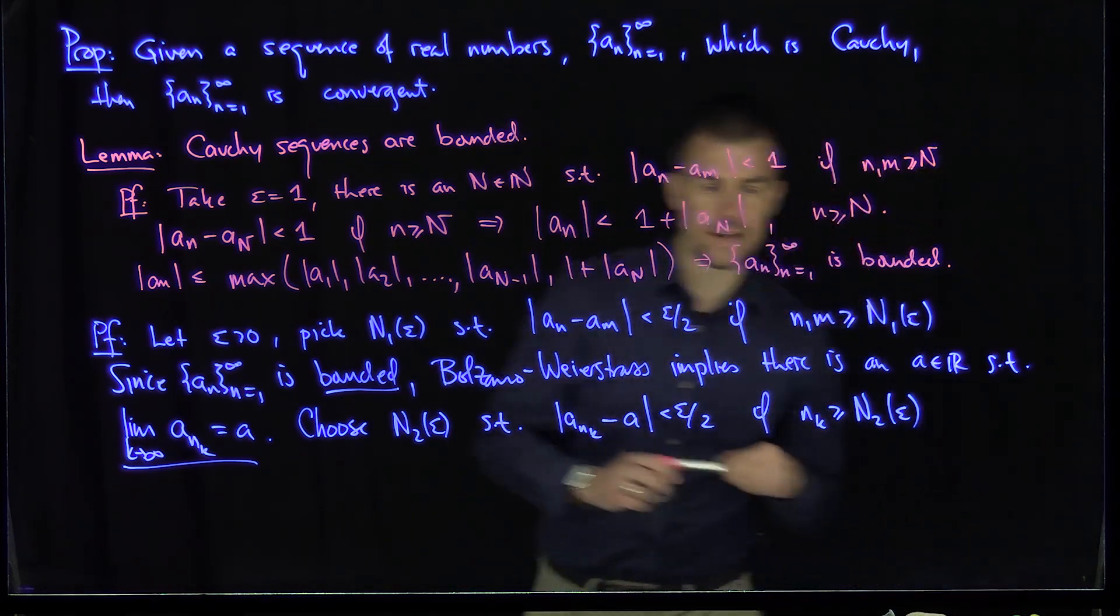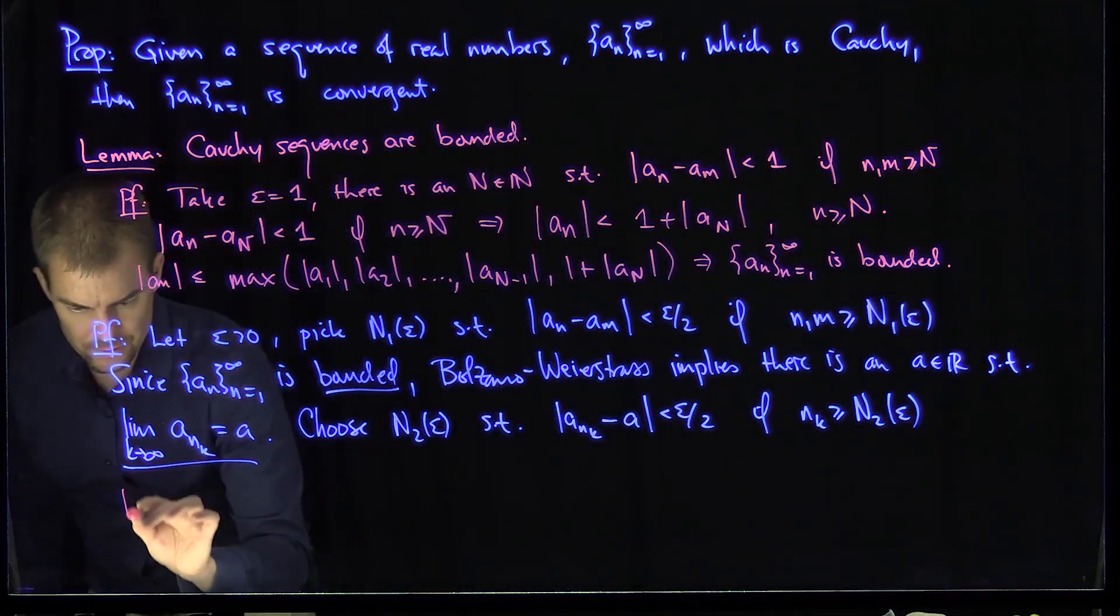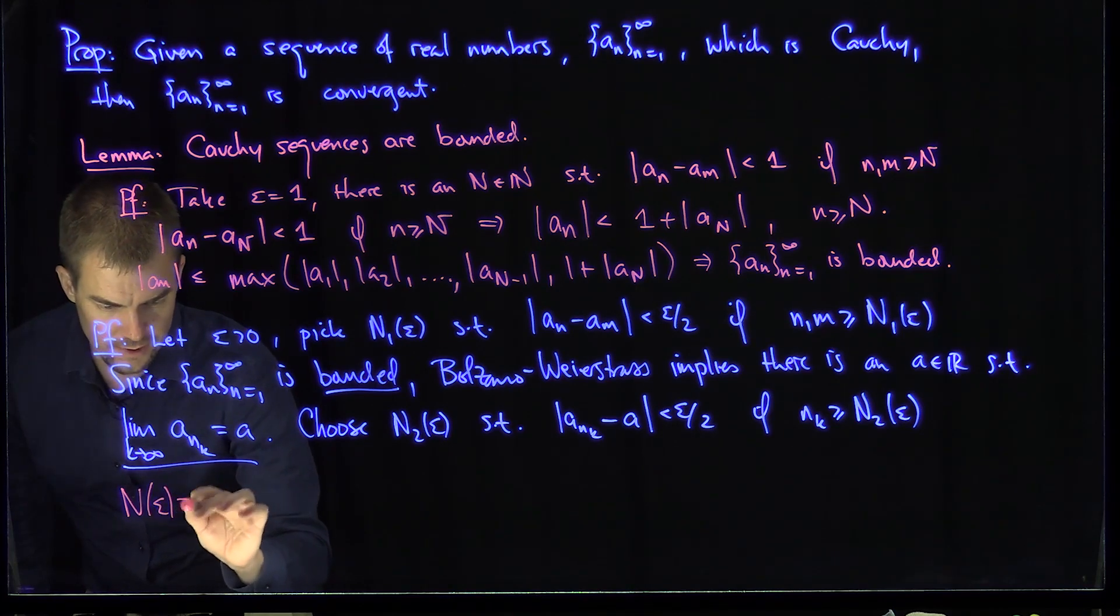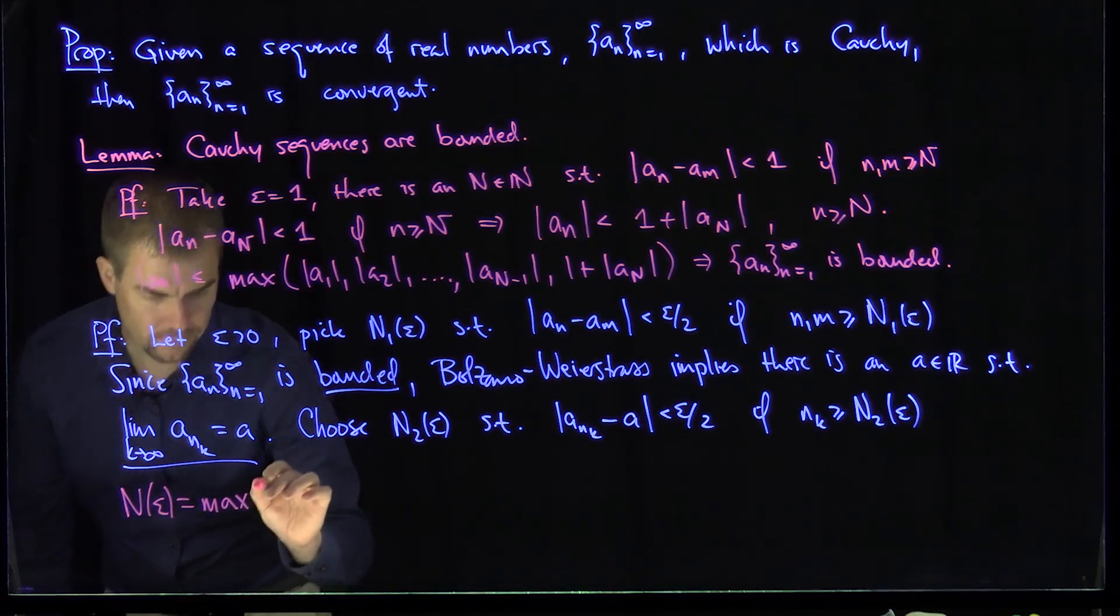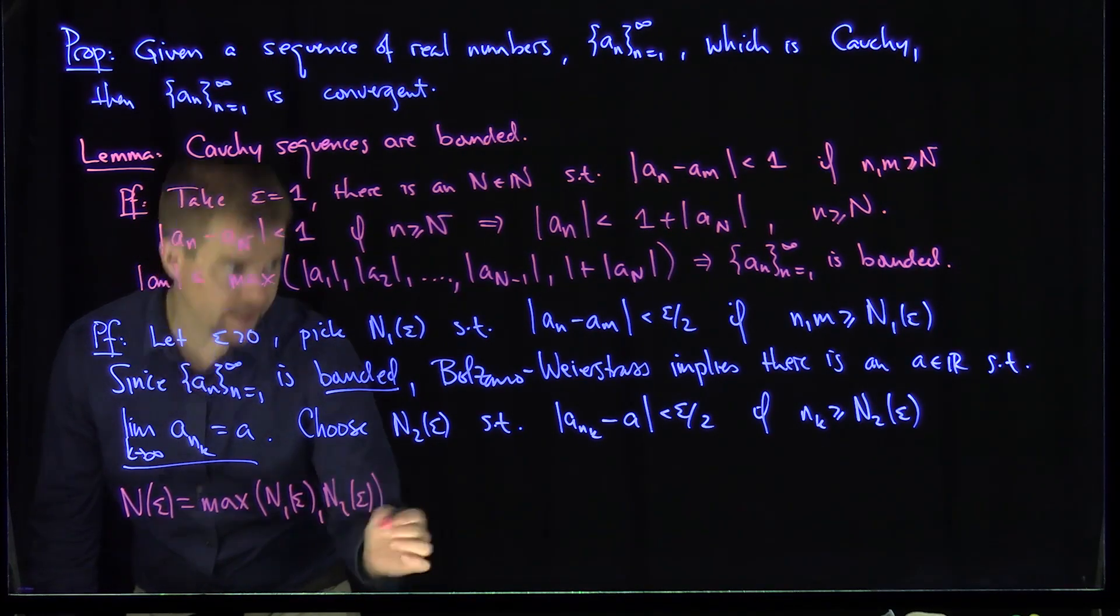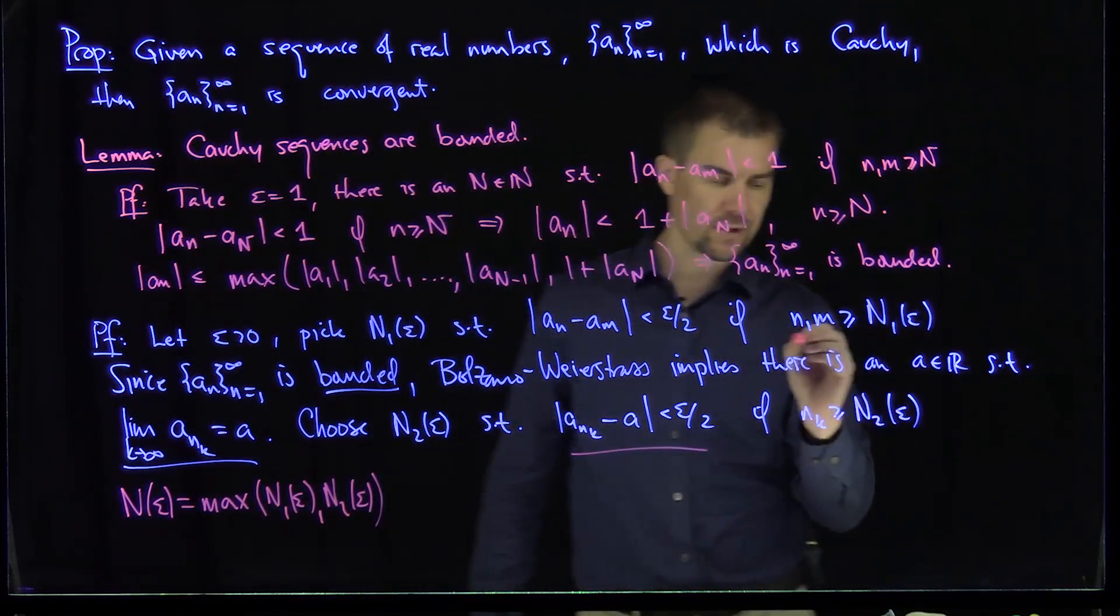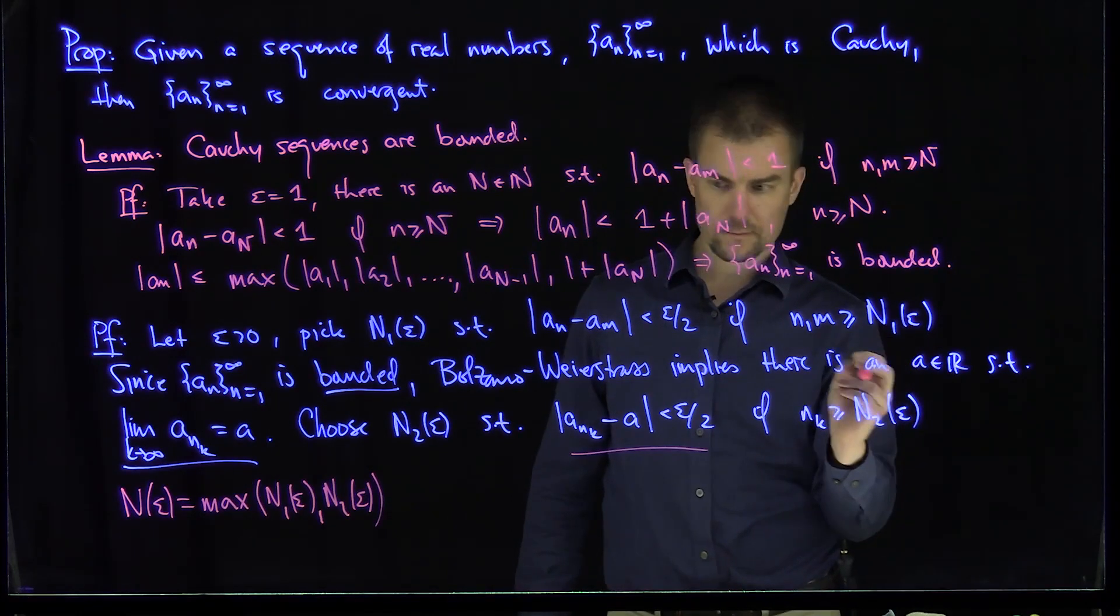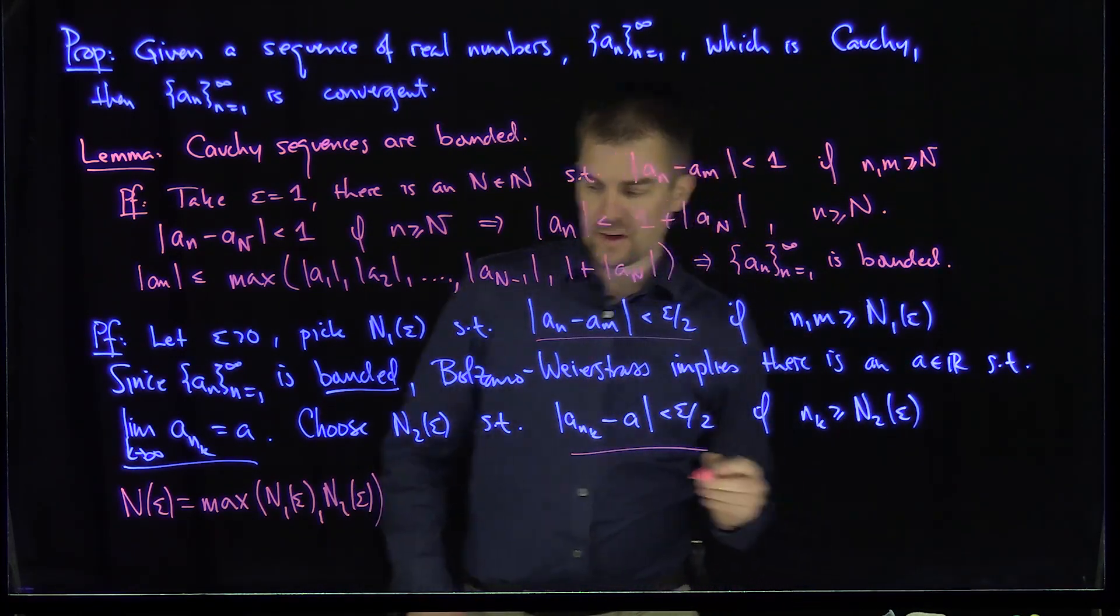And now I'm going to define N(epsilon) to be the maximum of those two. N(epsilon) is going to be the maximum of N_1(epsilon) and N_2(epsilon), so that both conditions are satisfied. So that this condition is satisfied and this condition is satisfied. Over here.